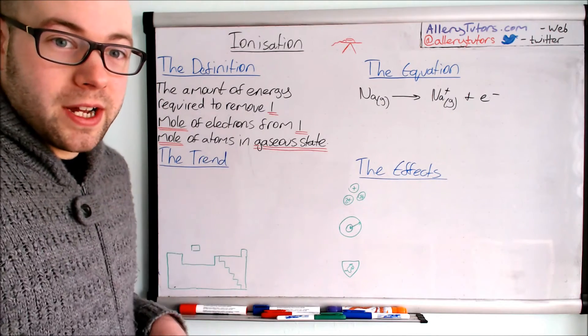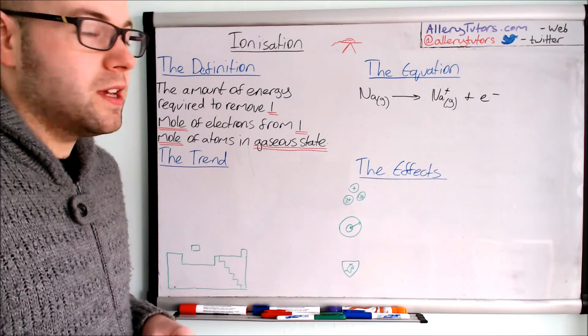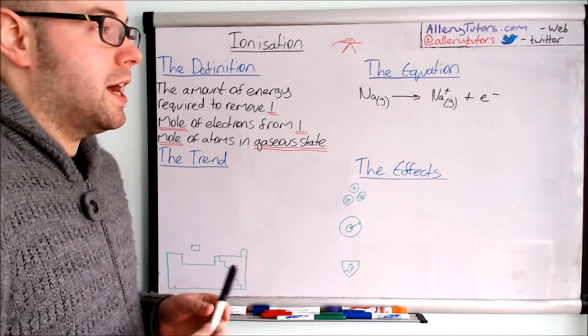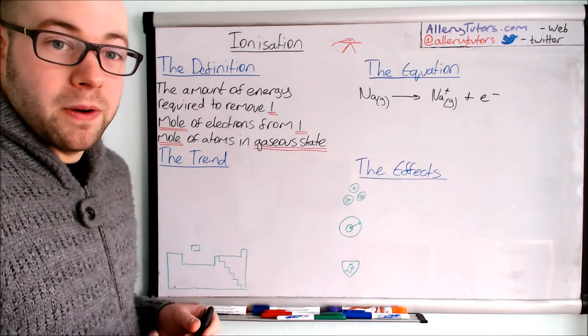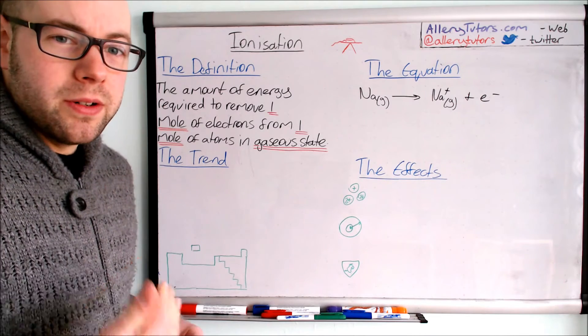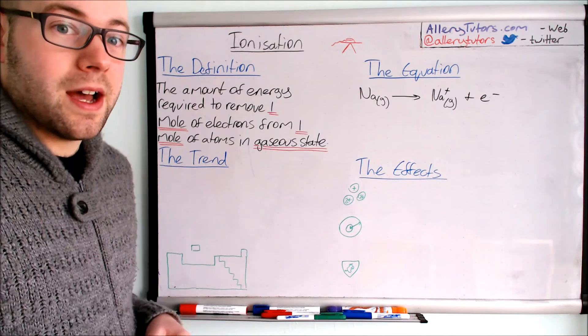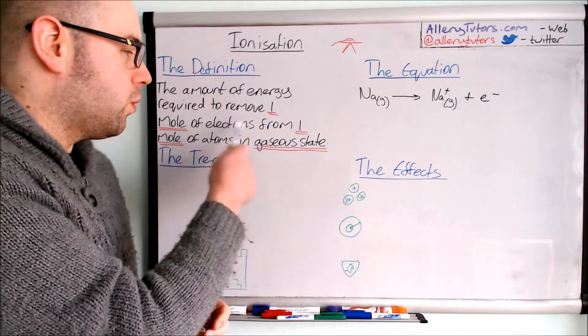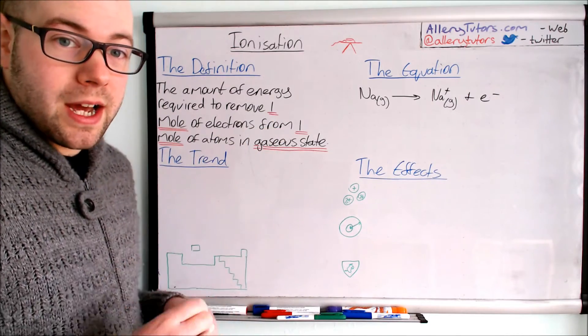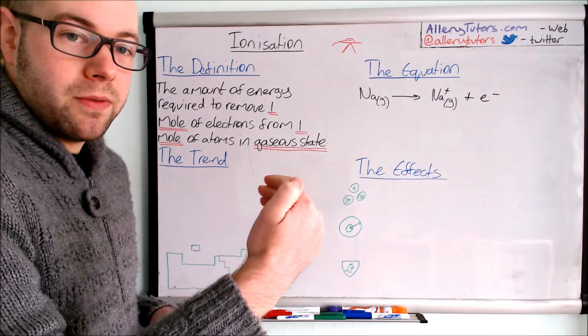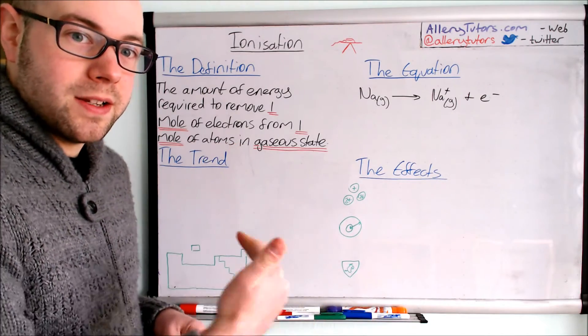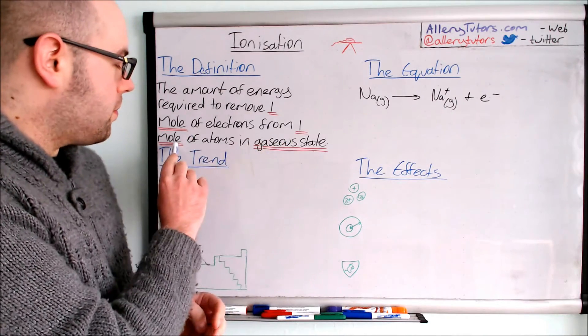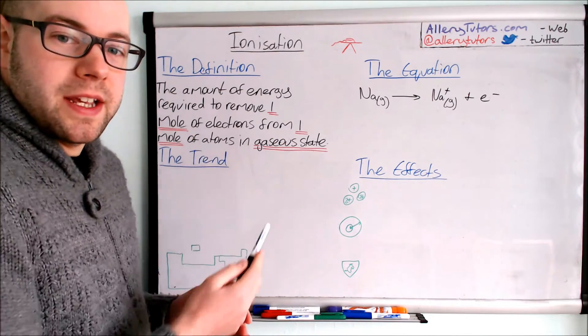State symbols is always gas so it's pretty easy. This is called the first ionization energy. We're removing the first electron and only electron in the outer shell for sodium, and this is producing one electron. We can also do the same for the second ionization energy.